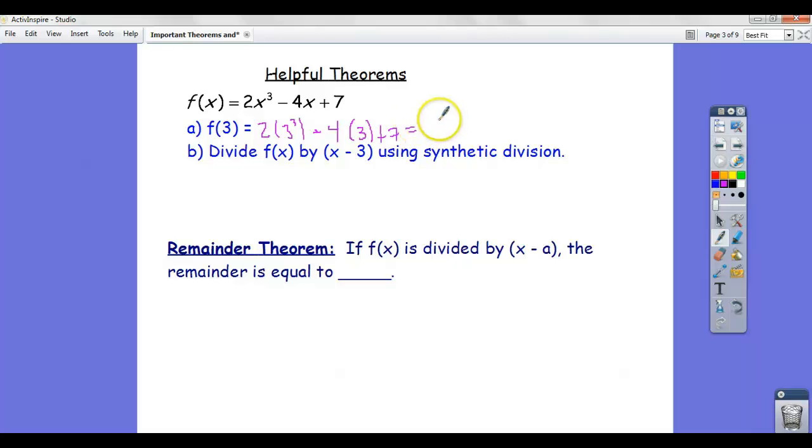That's 27 times 2 is 54 minus 12 plus 7, and that gives me 49.